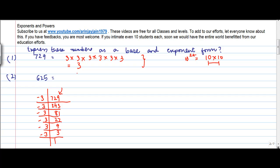So this can be written as 3. And how many times is it multiplied? It is multiplied 6 times. So we can write this as 6. So we say 729 is equal to 3 to the power 6, where 3 is the base and 6 is the exponent.